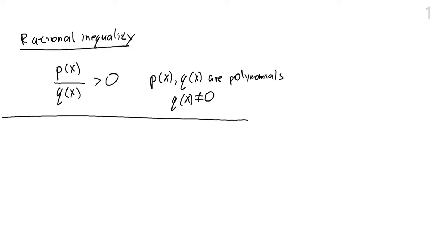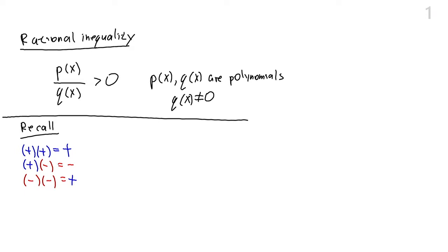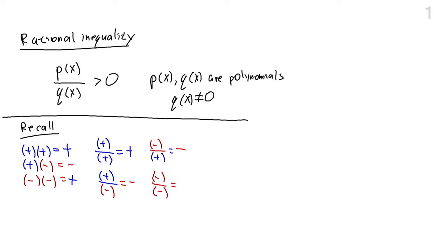Similar to what we needed to recall with polynomial inequalities, recall the following from signs of real numbers. A positive number times a positive number gives a positive number. A positive number multiplied by a negative number gives a negative number. A negative number times a negative number gives a positive number. The same thing happens if we divide: a positive divided by a positive is positive, a positive divided by a negative is negative, a negative divided by a positive is negative, and a negative divided by a negative is positive.